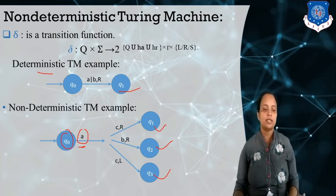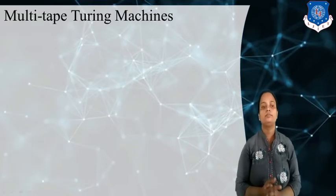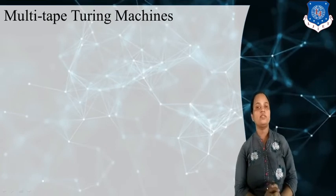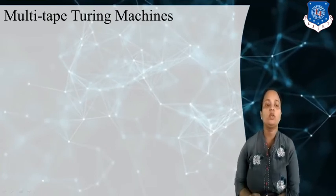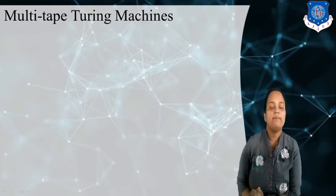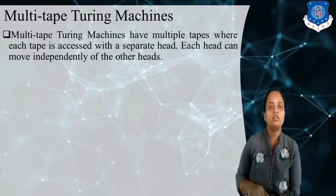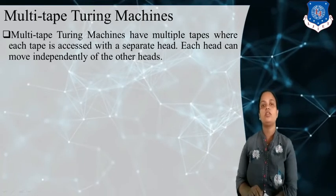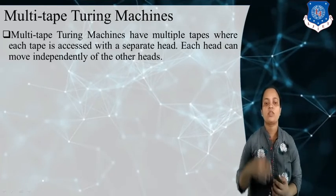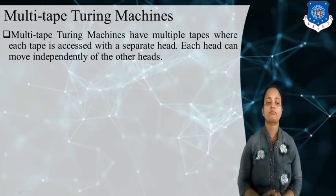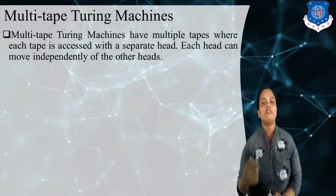I hope this concept of the non-deterministic Turing machine is clear to you. Now let's move on. What is a multi-tape Turing machine? As the name suggests, a multi-tape Turing machine contains multiple tapes, where each tape is accessed with a separate head.